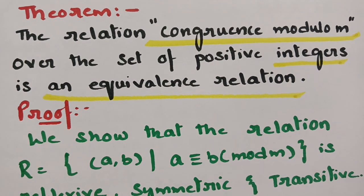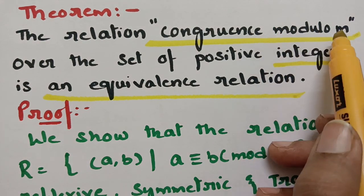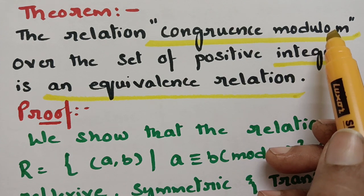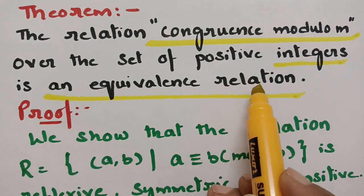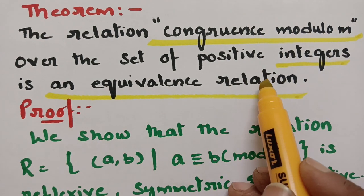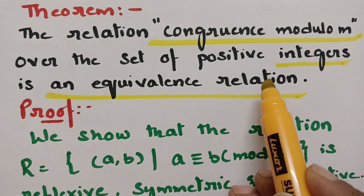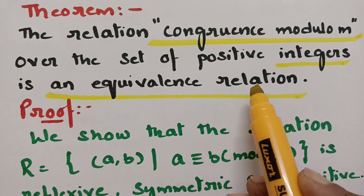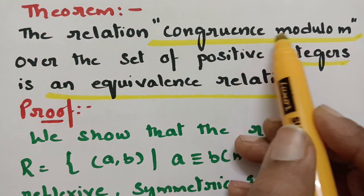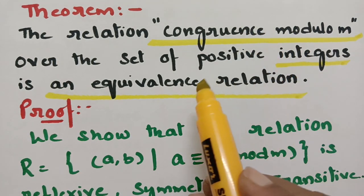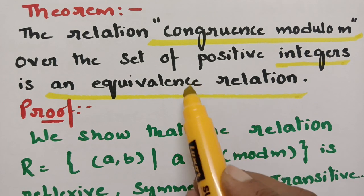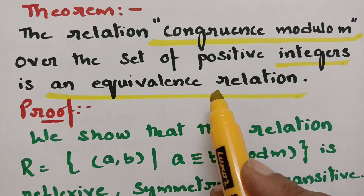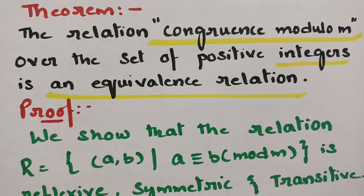In order to show that it is an equivalence relation, we have to prove three properties: reflexive, symmetric and transitive. The congruence modulo m means if m divides a minus b, then a is congruent to b mod m. We take the congruence relation and show it satisfies all three properties. This is the proof.